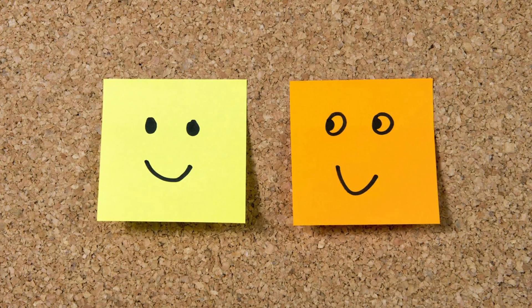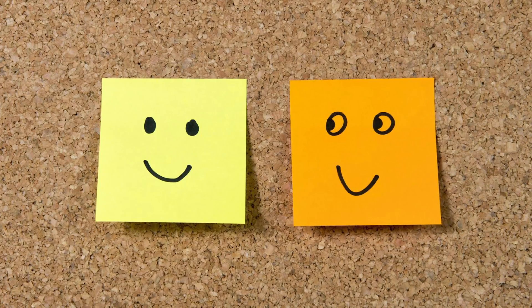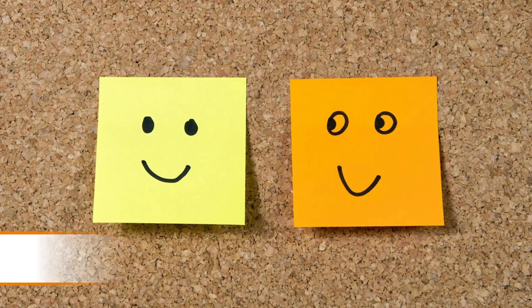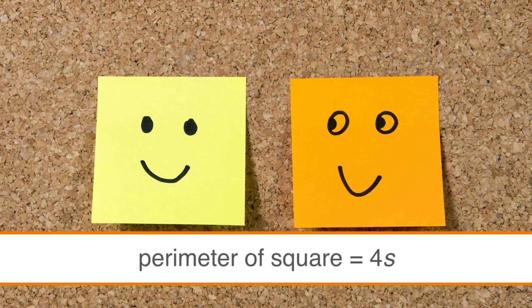Squares are even easier since all sides are equal. To find the perimeter, you can just multiply the length of one side by 4. So the perimeter of a square equals 4S. In this example, since we know that one side is 3, and the perimeter is just 4 times the length of a side, we know that the perimeter of this square is 4 times 3, or 12.